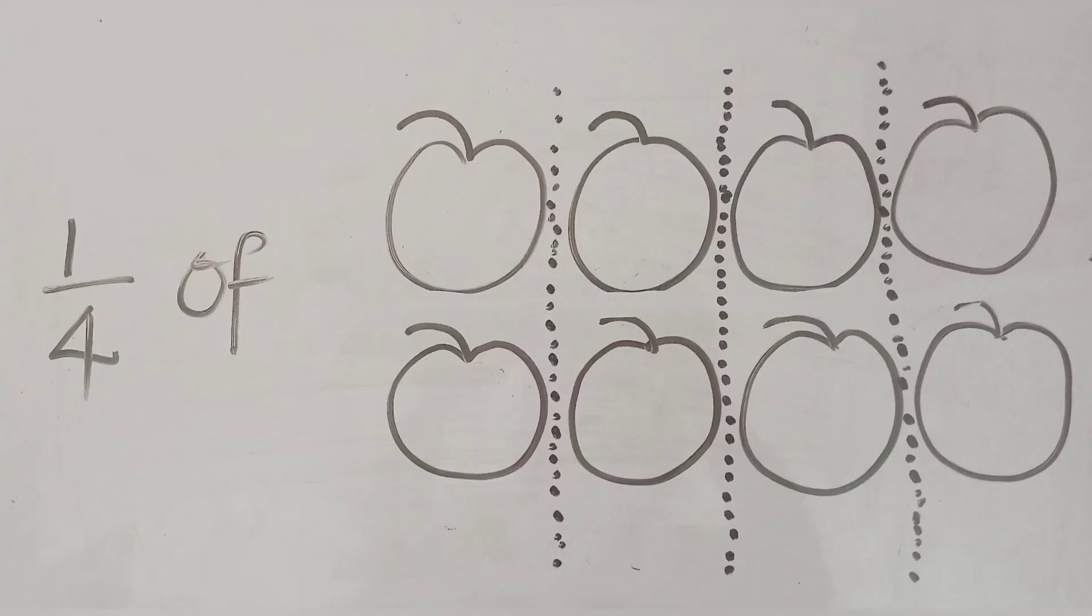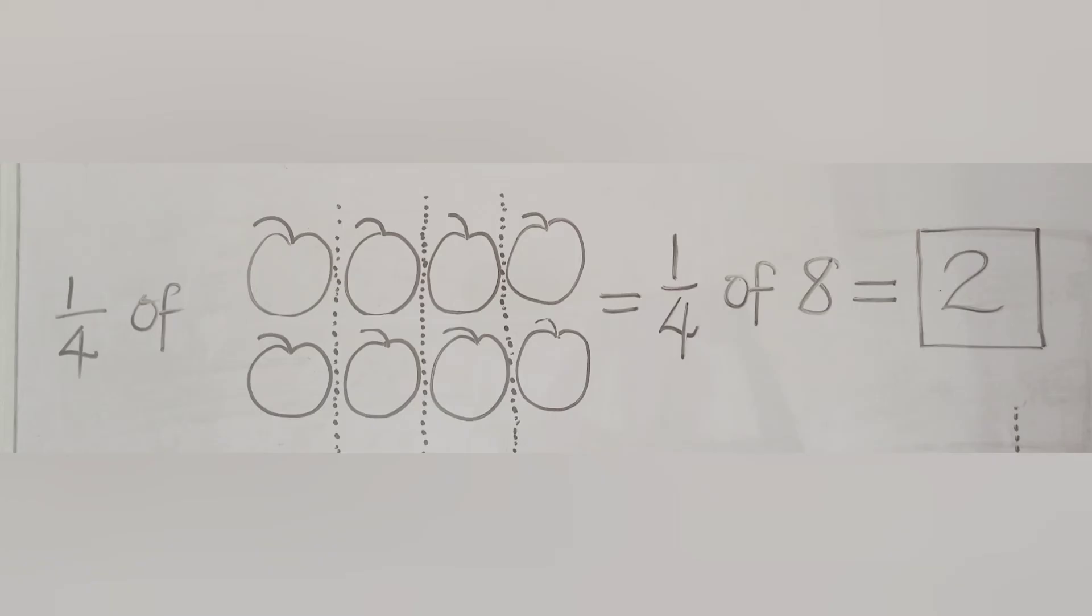If I have 8 apples and I want to find one quarter of 8 apples, what will I do? I'll simply divide the 8 apples into 4 equal parts. And when I do that, I'm going to get 2 apples.